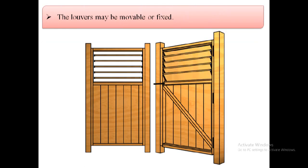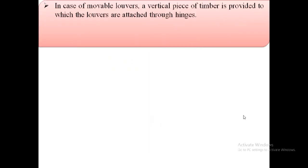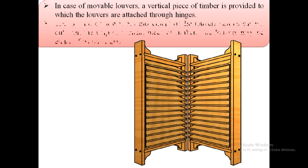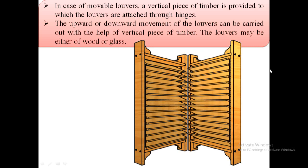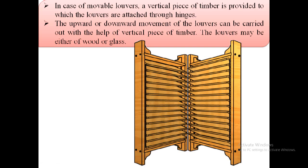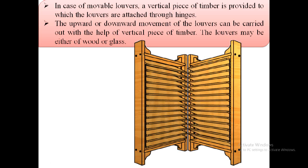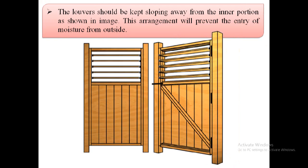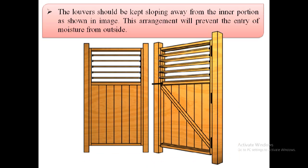The louvers may be movable or fixed. In the case of movable louvers, a vertical piece of timber is provided to which the louvers are attached through hinges. The upward or downward movement of the louvers can be carried out with the help of this vertical piece of timber. The louvers may be either of wood or glass. The louvers should be kept sloping away from the inner portion, which will prevent the entry of moisture from outside.